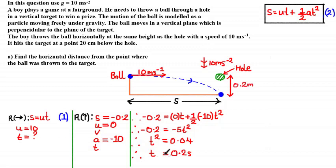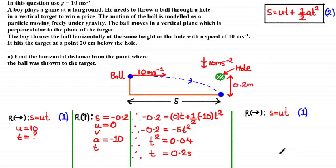Now we have the time of flight t = 0.2 seconds, which we substitute back into the horizontal motion equation: s = 10 × 0.2 = 2 metres. So the horizontal distance from the point where the ball was thrown to the target is 2 metres.